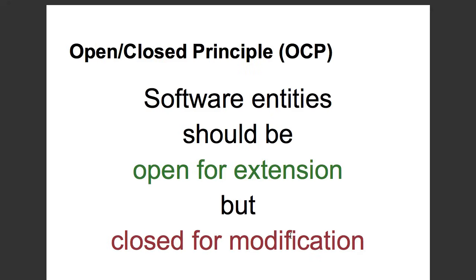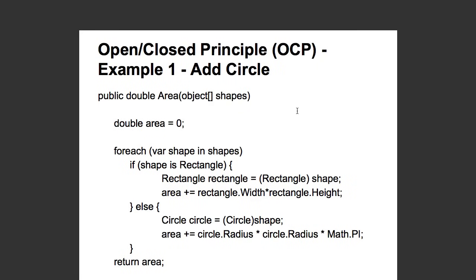The second most important principle is the Open-Closed Principle. It says software entities should be open for extension but closed for modification. What does that mean? Look at this implementation of calculating area for a shape. Here's passing in an array of shapes, and we are checking if a shape is rectangle, then do this.